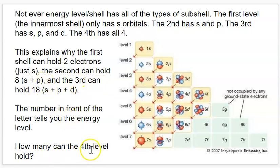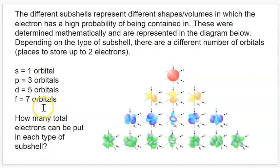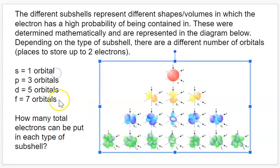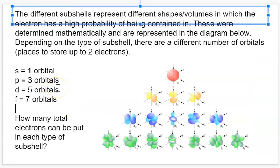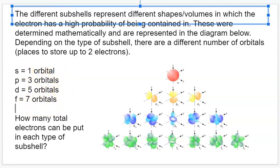If we were to try to predict how many electrons a fourth energy level could hold — well, the fourth energy level is when we start to get the F orbitals. So if we have seven different F orbitals and each can hold two, that's 14, plus the D which is five times two — 10. So that's 14 plus 10, that's 24. And then the P has three orbitals each holding two, so that's plus six, and then the S has one which holds two. So it's 14 plus 10 plus six plus two — a total of 32 electrons for our fourth level.